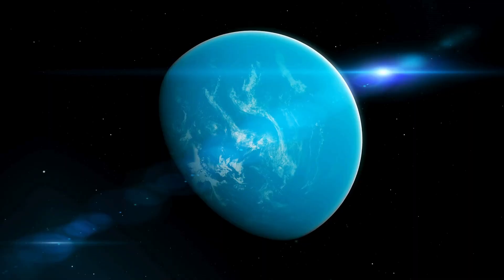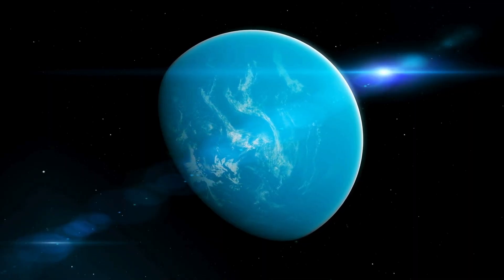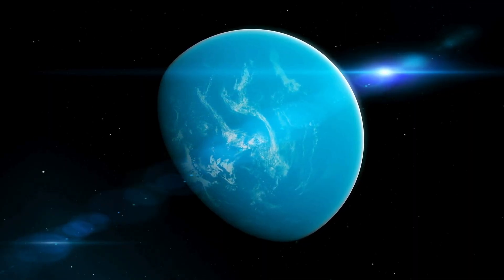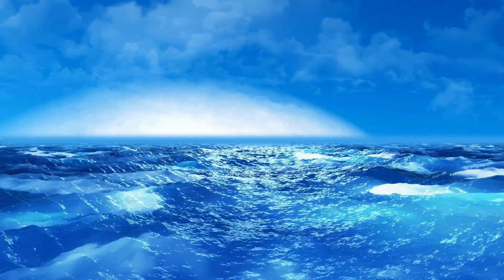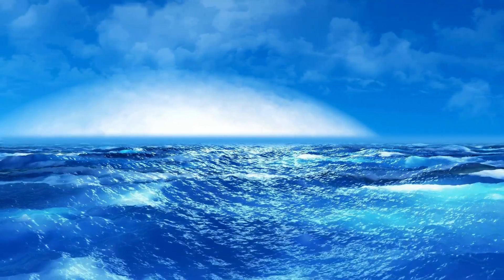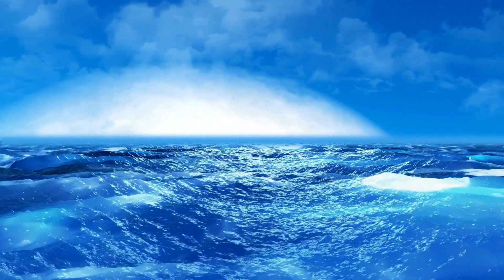You see, Proxima b orbits its star at an incredibly close distance, just 7.3 million kilometers away, which is less than 5% of the distance between Earth and the Sun. This proximity means that the planet completes a full orbit in just 11.2 Earth days.